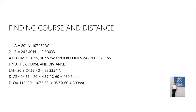Now I'm going to give you an example on how to solve middle latitude sailing — starting with finding course and distance. Given: point A is 20 degrees North, 107 degrees 30 minutes West. Divide 30 by 60 to get the decimal equivalent, which is 0.5. Point B is 24 degrees 42 minutes North — divided by 60 gives 0.7 — so 24.7 degrees North. Longitude B is 112 degrees 30 minutes West, or 112.5 degrees West.